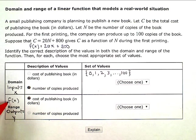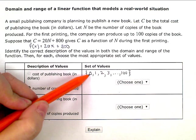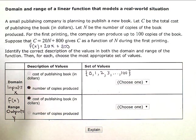So now I want the range or the output. In other words, if I print zero books, what's the cost? So I'm going to look at my function here.